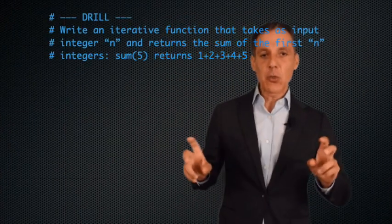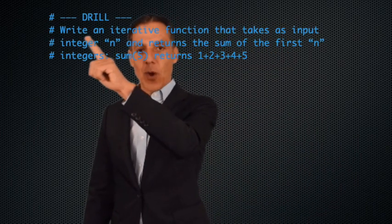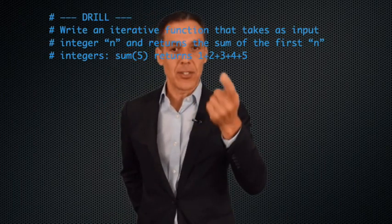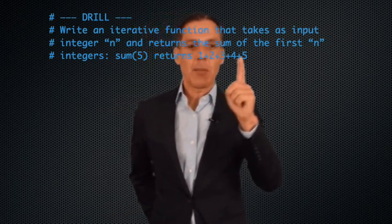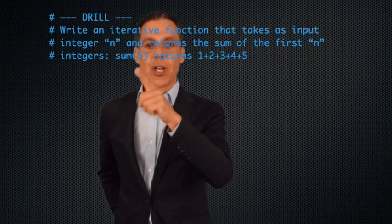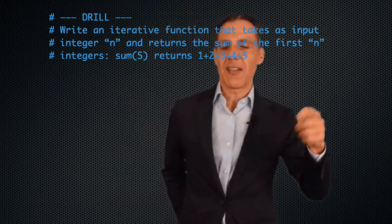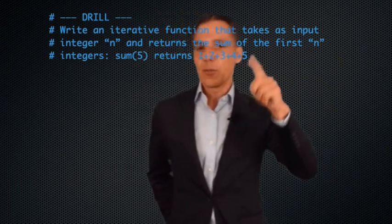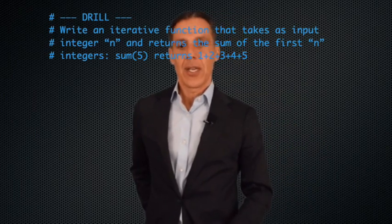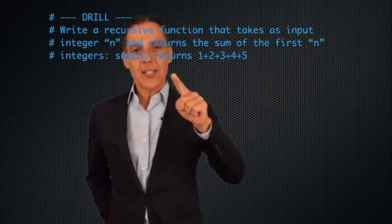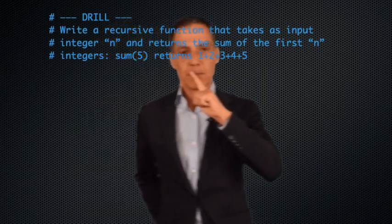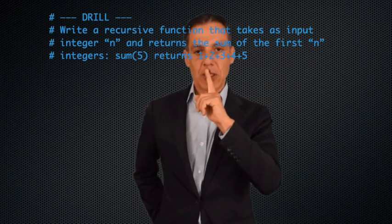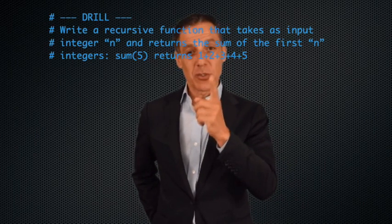Let's do a drill — I'm going to give you two back-to-back. The first one: write an iterative function that takes as input a positive integer n and returns the sum of the first n integers. So `sum(5)` returns 1 + 2 + 3 + 4 + 5. This looks a lot like factorial. Do that iteratively — while loop, for loop, I don't care how you do it. Then when you're done, do exactly the same thing but recursively. Go ahead and pause the video and take some time to do those two.